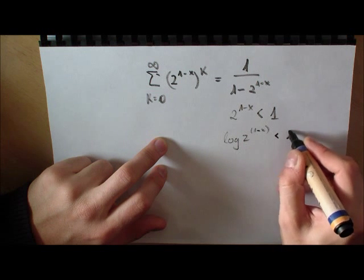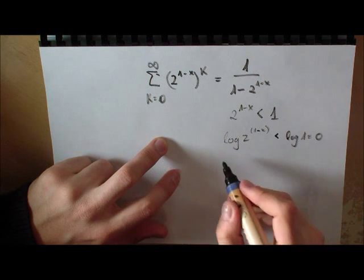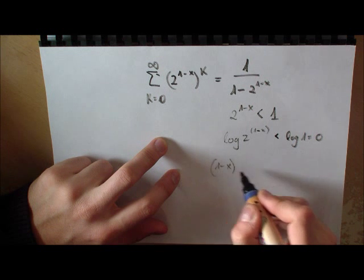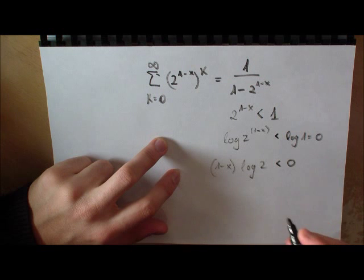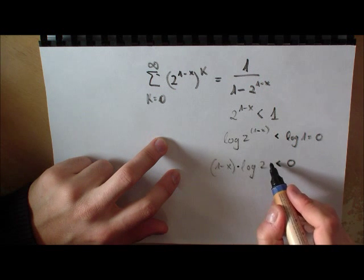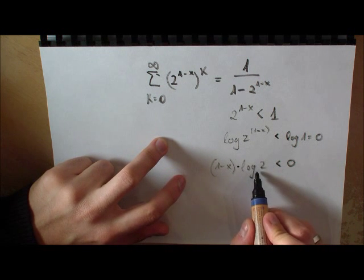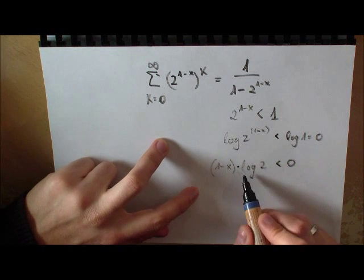you get logarithm of 2 to the 1 minus x smaller than the logarithm of 1, which is 0. Then you can see 1 minus x times logarithm of 2 is smaller than 0.